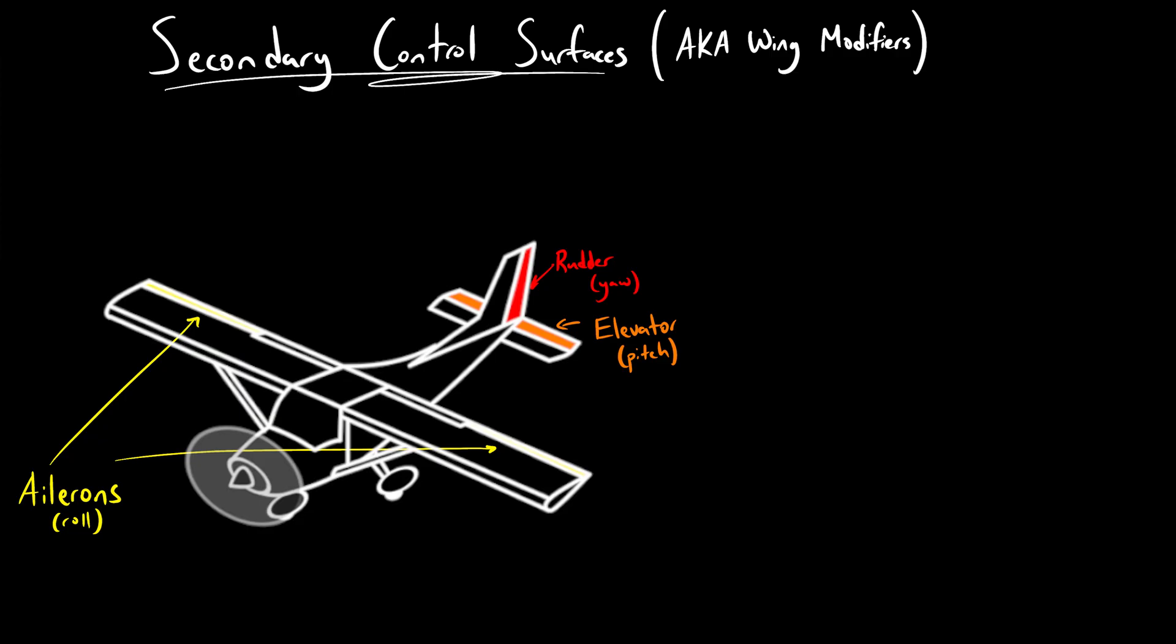The last kind of control surface we will cover is the least common. The airbrake is used to increase drag to slow down the plane and assist in descent and landing. There are many possible configurations depending on the use case, but the two most common are those that extend outward from the tail to have little effect on lift, and those which are located above and below the wing.